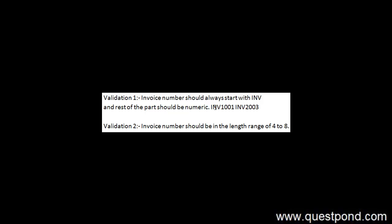The second validation or restriction is that the invoice number should be in the length range of 4 to 8. In other words, the minimum length of the invoice number can be 4 and the maximum length can be 8. As a tester, you would like to generate a range of dummy data to test if your application is able to match these validations.